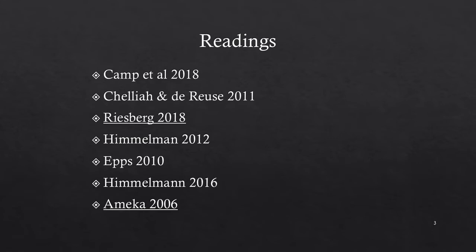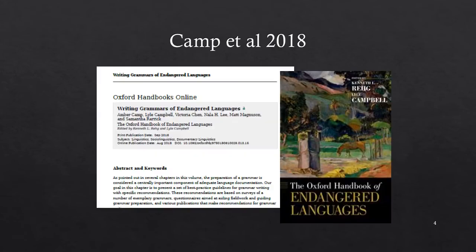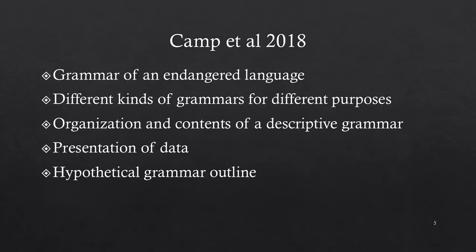These are the readings for this week. The two initial required readings are Reesburg 2018 and Ameca 2006. Camp et al. is a chapter in the Handbook of Endangered Languages published by Oxford. This chapter gives a definition of grammars of endangered languages and talks about different kinds of grammars used for different purposes, such as reference grammars versus pedagogical grammars or grammar sketches.